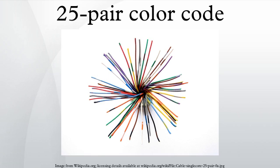This means that the first pair is a mate of white with a blue tracer and a color wire of blue with a white tracer. Pair 17 would be a mate of yellow with an orange tracer and a color wire of orange with a yellow tracer.